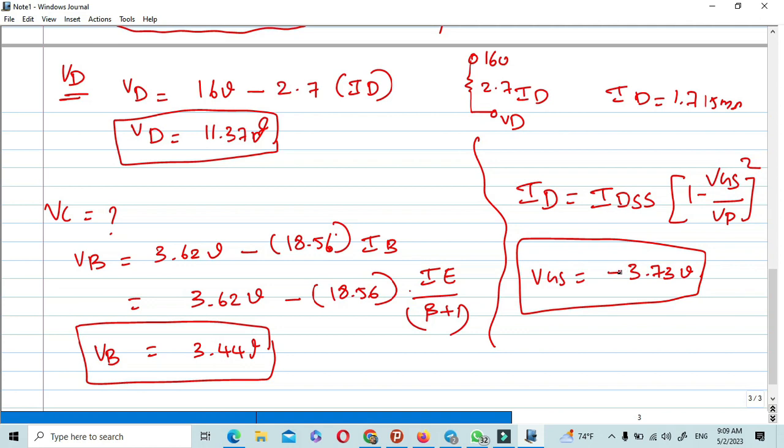The remaining values you can use as a homework problem, but I will write the final formula: VC equals VG minus VGS. So finally, VC equals 7.17 voltage.